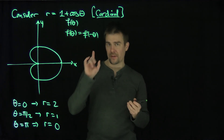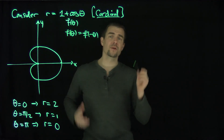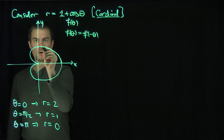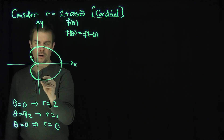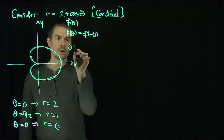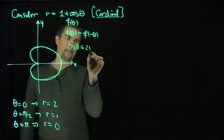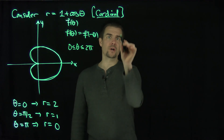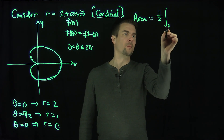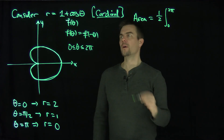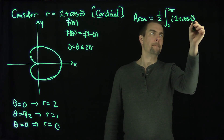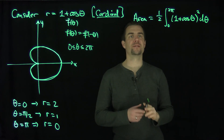I want to answer two questions: find the area inside the cardioid and find the arc length. The range of theta for this cardioid is zero to two pi. For the area, we use the area formula: Area equals one half the integral from zero to two pi of r squared d theta, which is one half the integral from zero to two pi of (1 plus cosine theta) squared d theta.